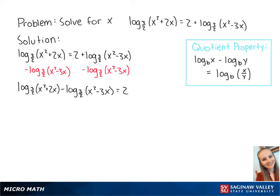Now we can use the quotient property to combine the logs. This gets us the log base 3 over 2 of x squared plus 2x over x squared minus 3x equals 2.